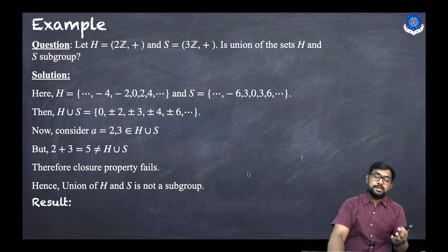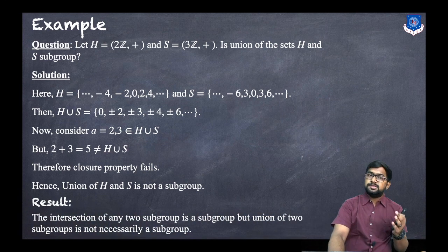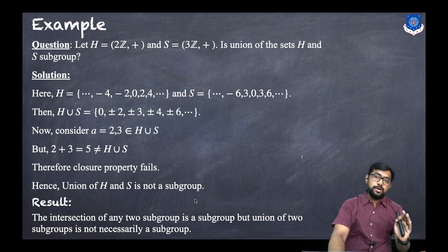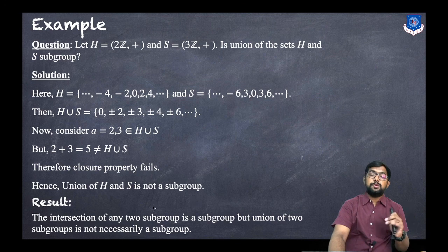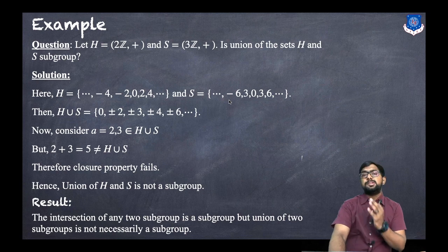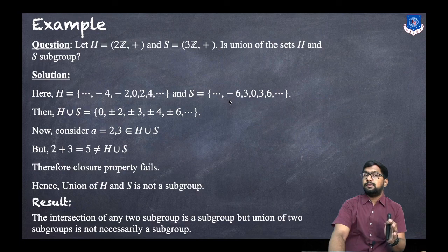This leads to an important result: the intersection of any two subgroups is a subgroup. However, the union of two subgroups is not necessarily a subgroup, and the counter-example above demonstrates this. If we take two subgroups and find their intersection, it will also be a subgroup, but for the union, that is not necessarily true.